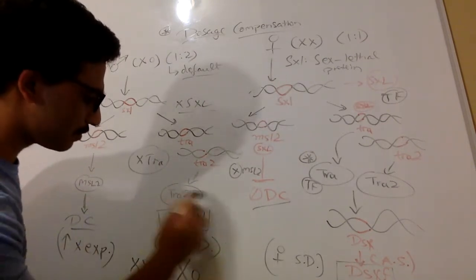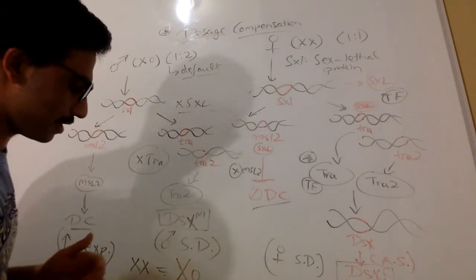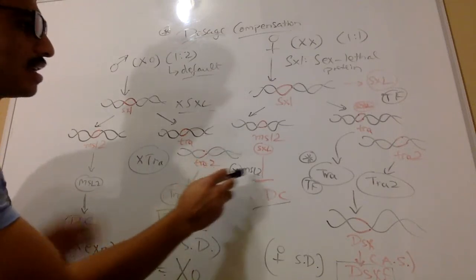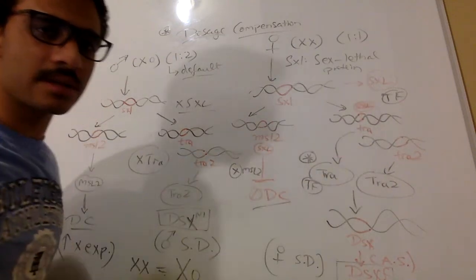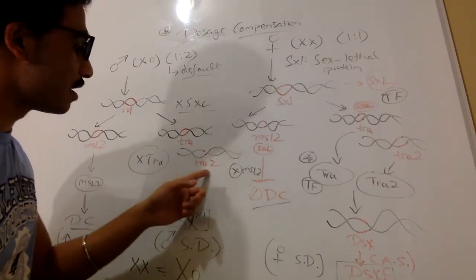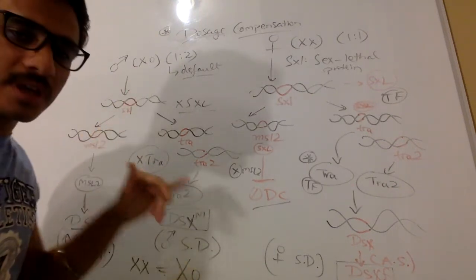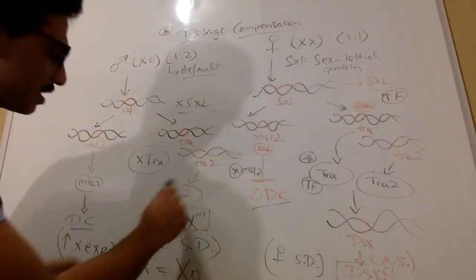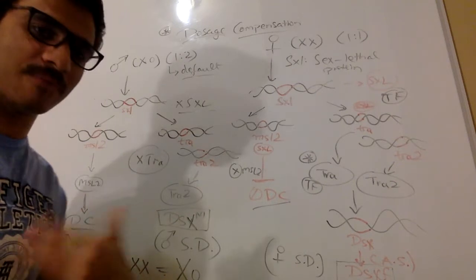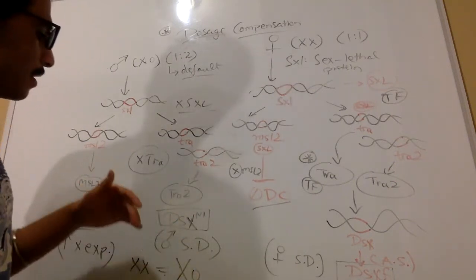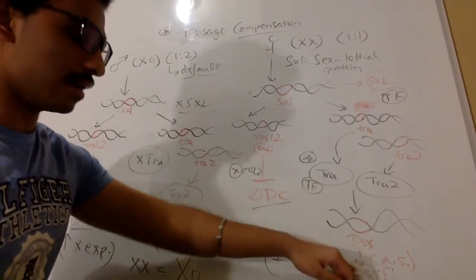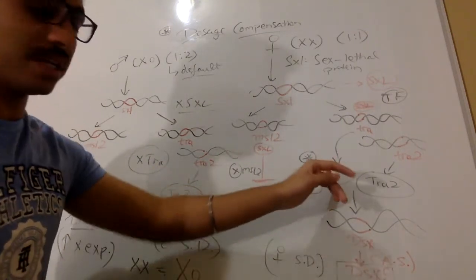The absence of DSX expression is what actually causes the sexual differentiation of males. Since sex lethal does not control the expression of TRA2 in males, we still have production of TRA2 protein, which helps in the sexual differentiation of males. However, it doesn't play any role in the expression of the double sex gene — only TRA does, and we don't have any TRA in males.